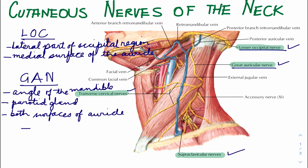The third nerve is the transverse cutaneous nerve, also known as the transverse cervical nerve. It emerges from behind the middle of the posterior border of the sternocleidomastoid muscle, passes forward across the muscle, and divides into branches that supply the skin on the anterior and lateral surfaces of the neck from the body of the mandible to the sternum.